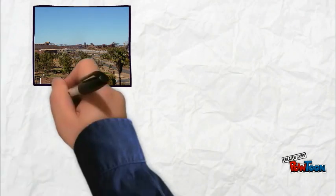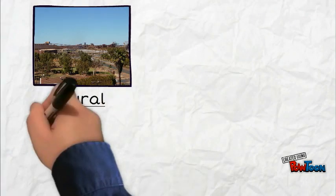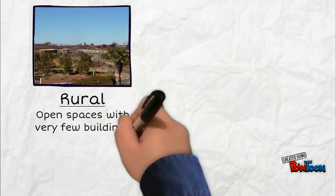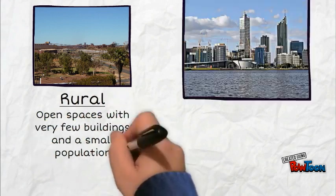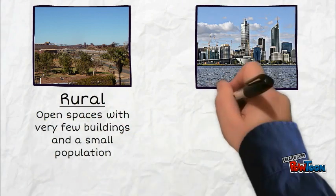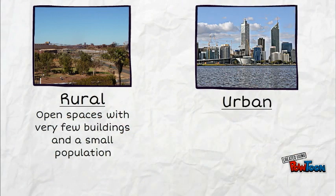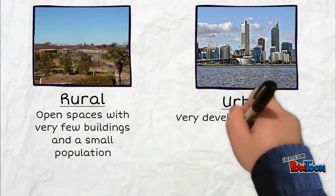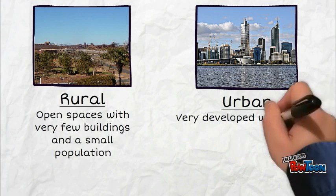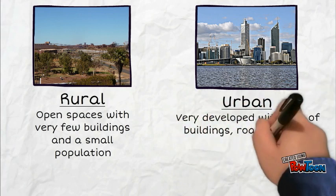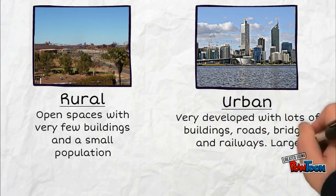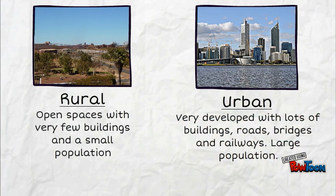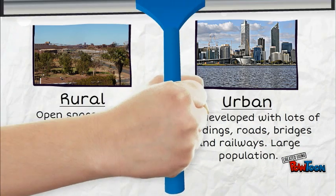Rural places have lots of wide open spaces with very few buildings and a small population. Urban places are very developed with lots of buildings, roads, bridges and railways. They have a large population.